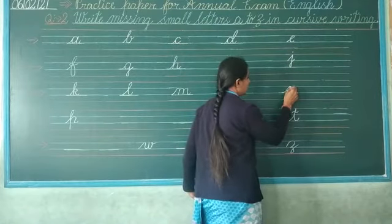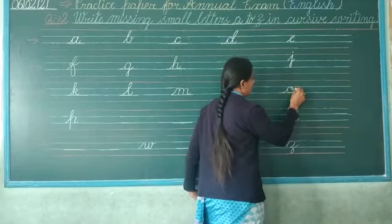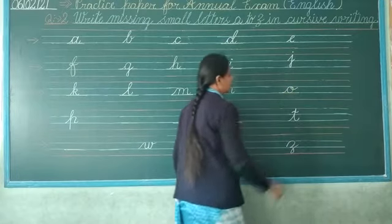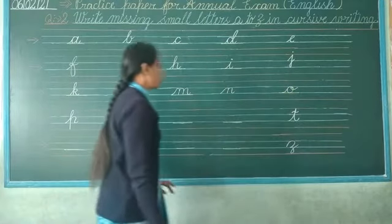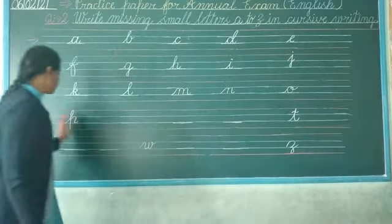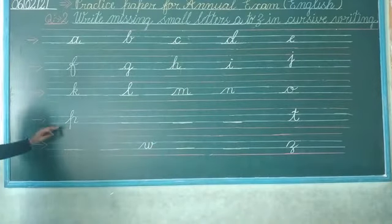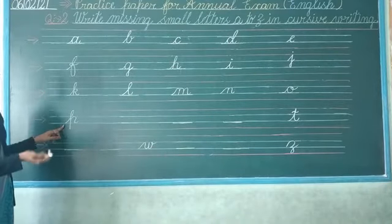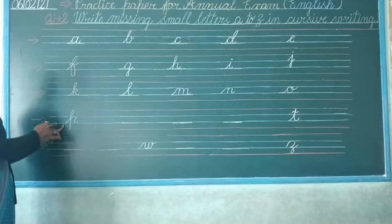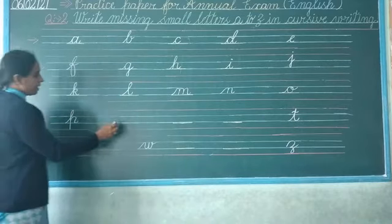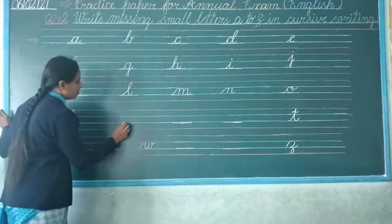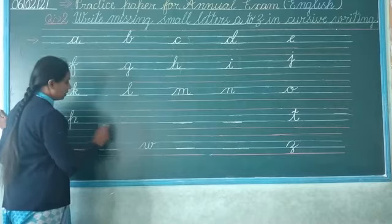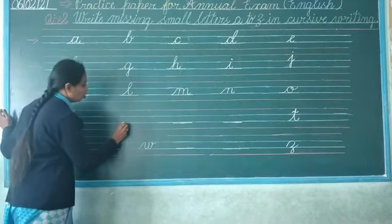Do like this — come back, go up and make that: O. Then which letter comes after O? P — it's already there. Next, which letter comes after P? Q.